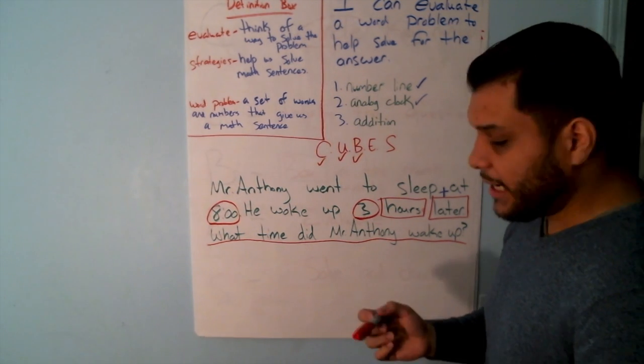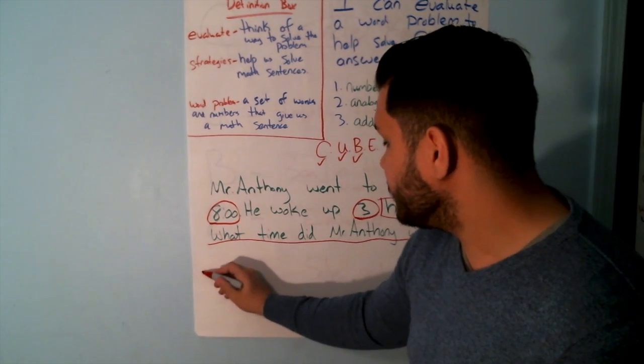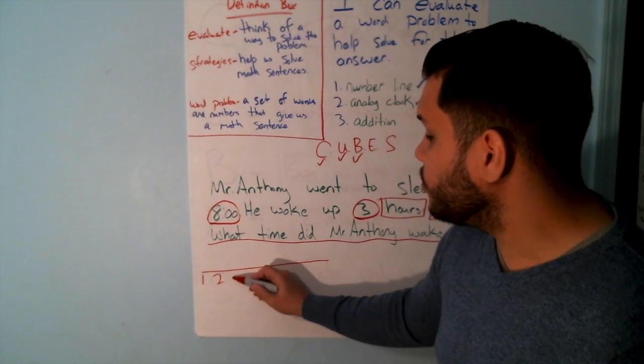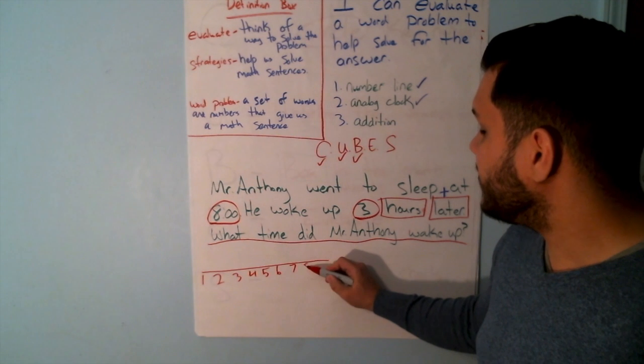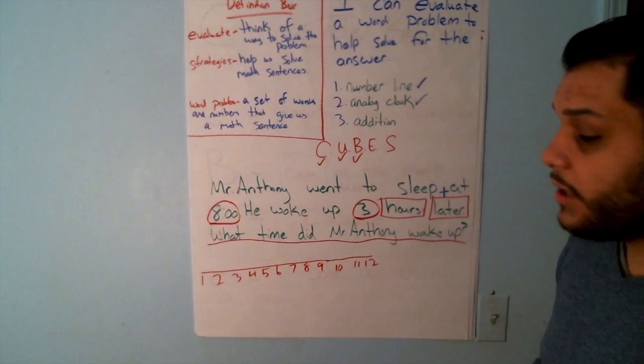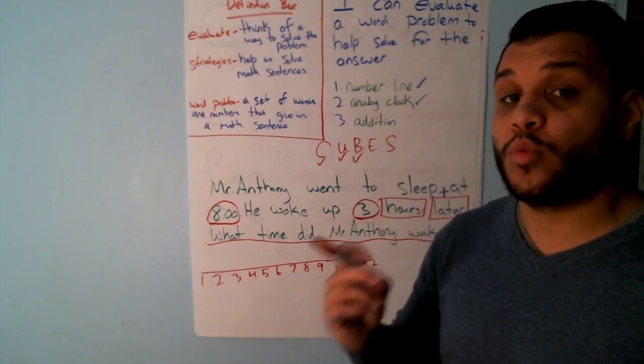So I'll start with my number line. My number line is a horizontal line. And I'm going to put the numbers 1, 2, 3, 4, 5, 6, 7, 8, 9, 10, 11, 12. Because that's what my analog clock has in it, numbers 1 through 12.